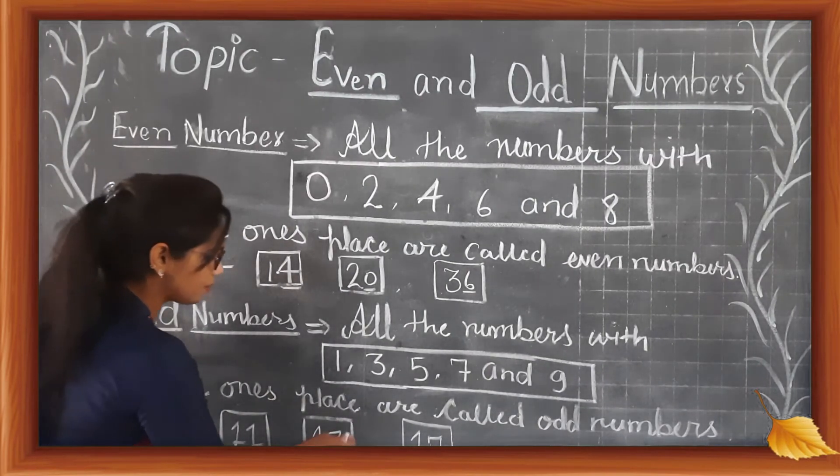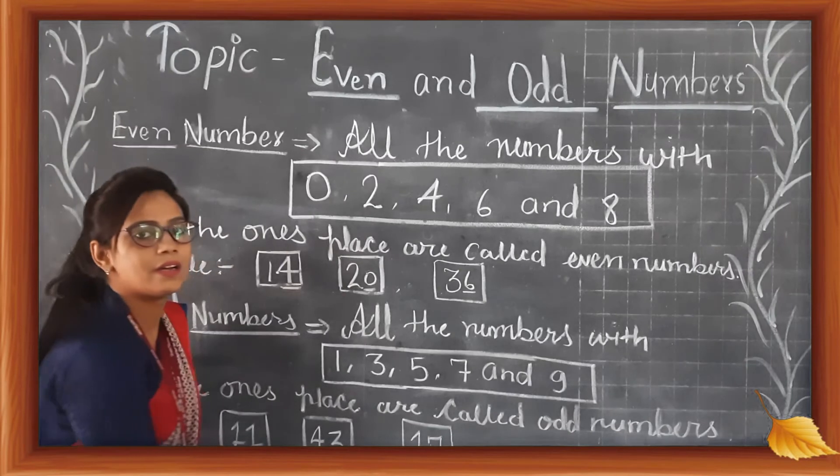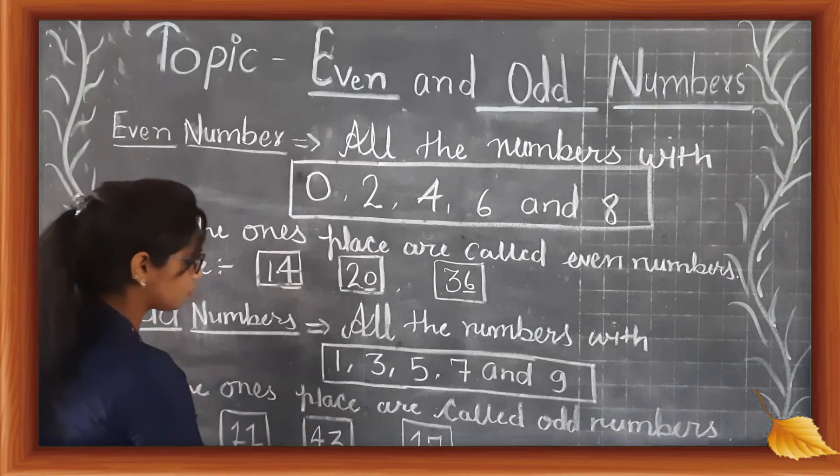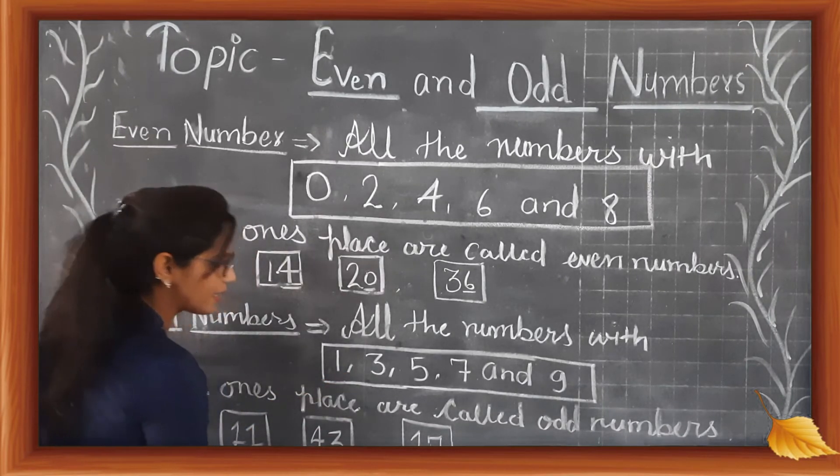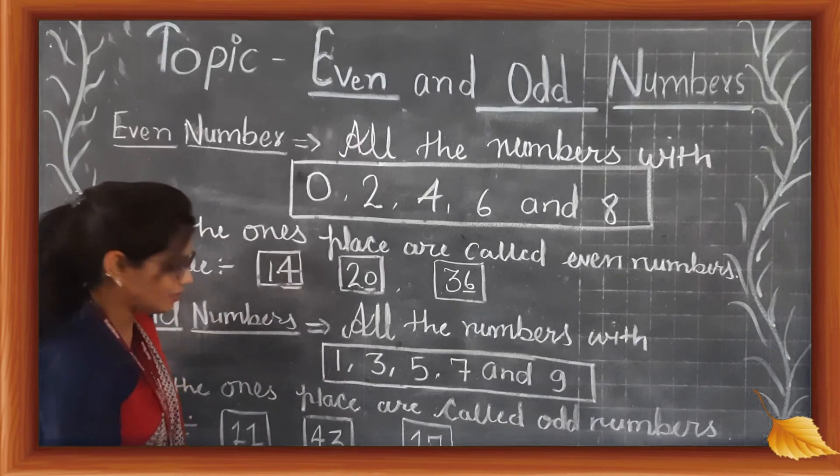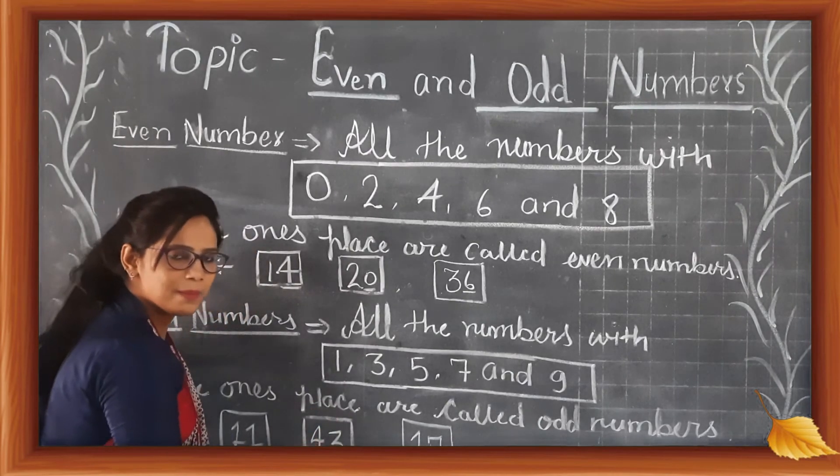Now 43. In the ones place is 3. 3 is an odd number, so 43 is an odd number.